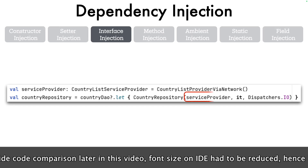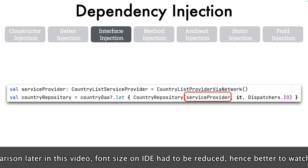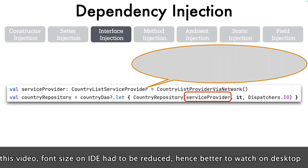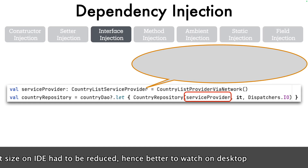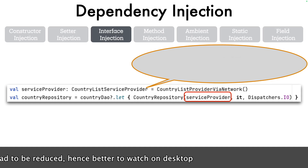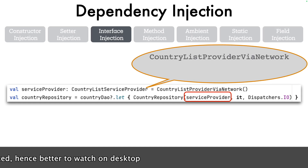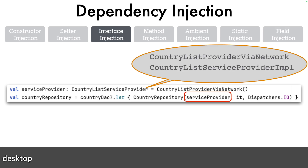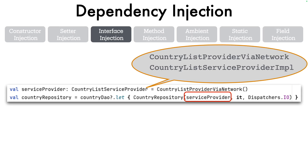The CountryRepository is using a service provider, and if you look at it, CountryListServiceProvider is actually an interface, and CountryListProviderViaNetwork is just one implementation of that particular interface. There is another implementation of that interface which is CountryListServiceProviderImplementation. We don't need to worry about what these two different flavors do, but just for discussion, we will assume these are two different flavors of CountryListServiceProvider.